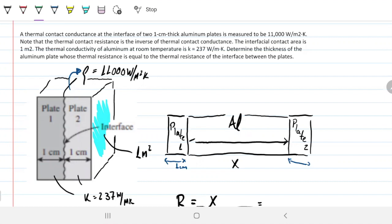The interfacial contact area is one meter squared. The thermal conductivity of aluminum at room temperature is 237. Determine the thickness of the aluminum plate whose thermal resistance is equal to the thermal resistance of the interface between the plates.